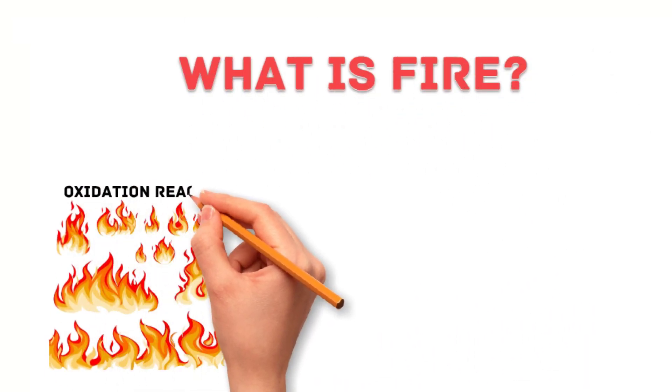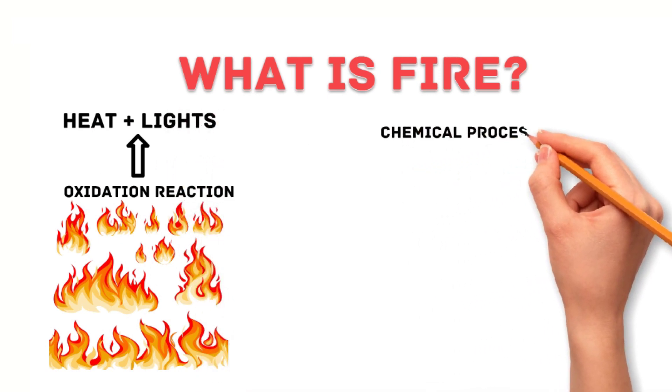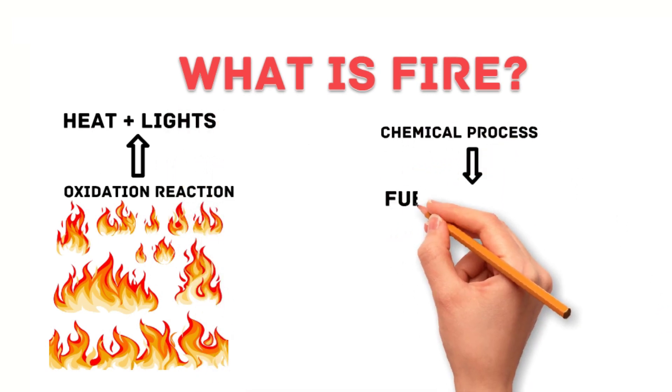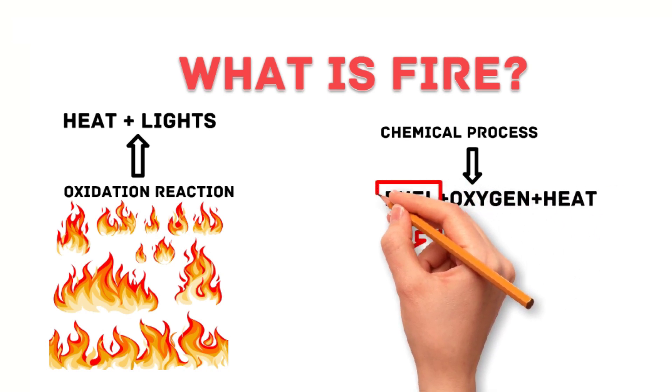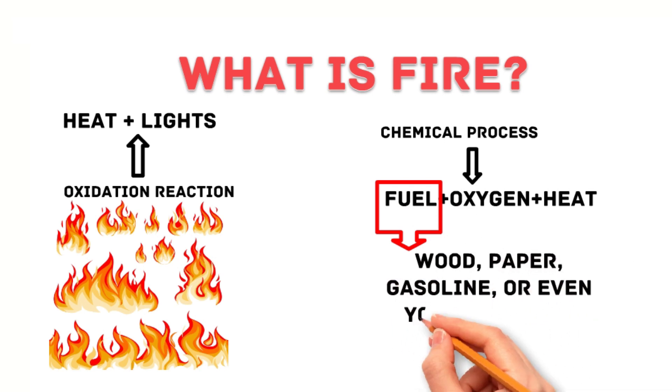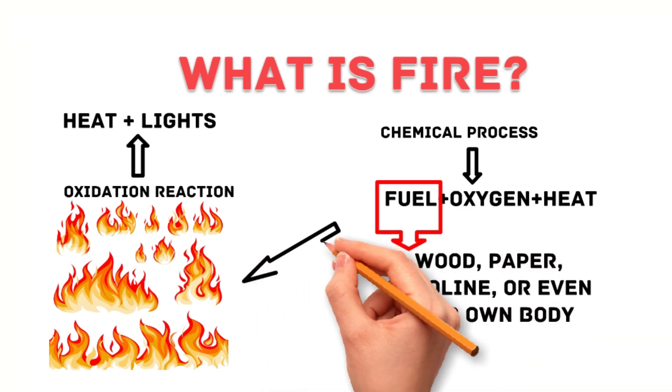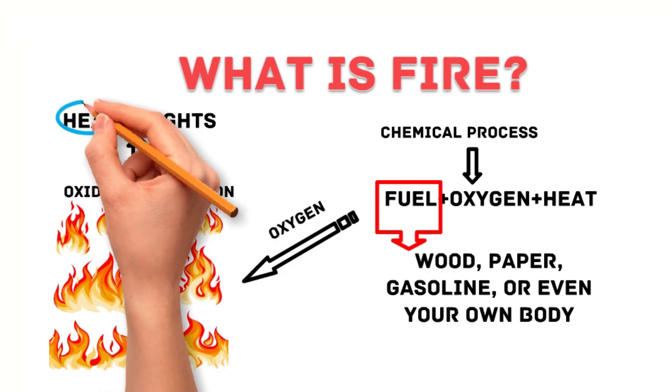Fire is a rapid oxidation reaction that releases heat and light. It is a chemical process that occurs when fuel, oxygen, and heat are present. The fuel can be anything that can burn, such as wood, paper, gasoline, or even your own body. The oxygen is the gas that helps the fuel to burn, and the heat provides the energy for the reaction to take place.